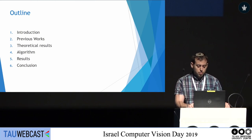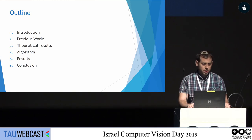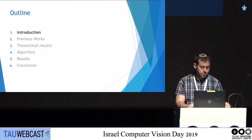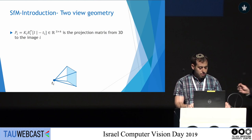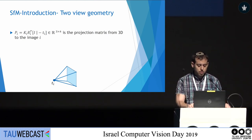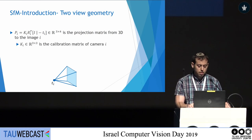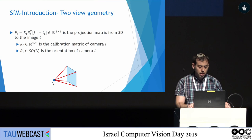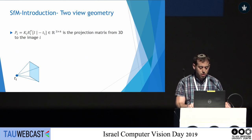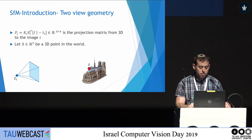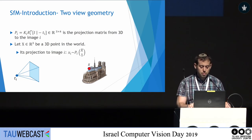I will start with a brief introduction to multi-view geometry. A camera projection matrix is defined by a three-by-four matrix that projects from 3D to an image I, where KI is the calibration matrix, RI is the orientation, and TI is the position of the camera in 3D coordinates. Given a 3D point X, this point can be projected to the image by multiplying it with the camera projection matrix.